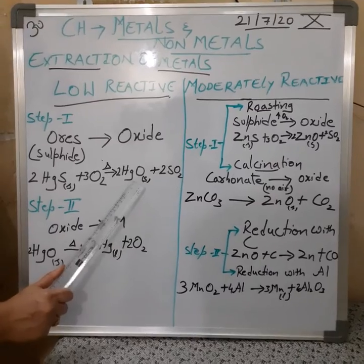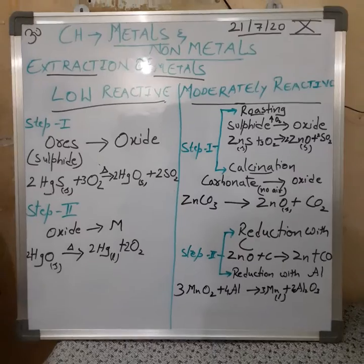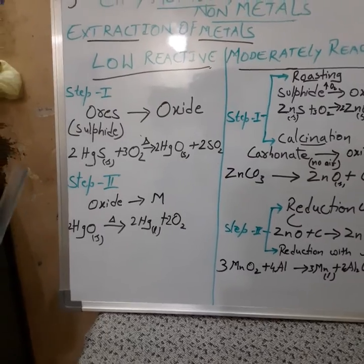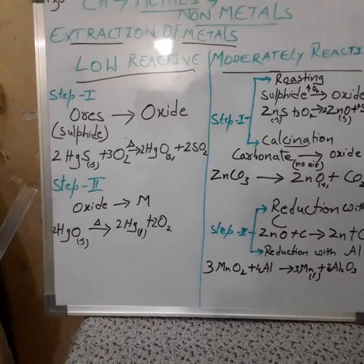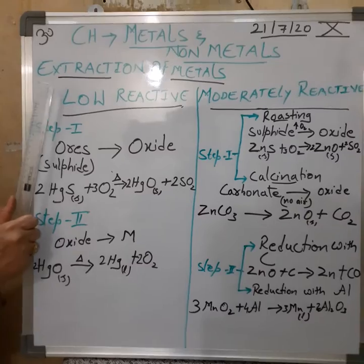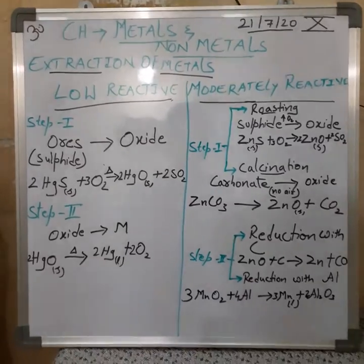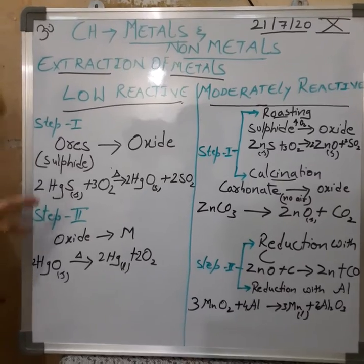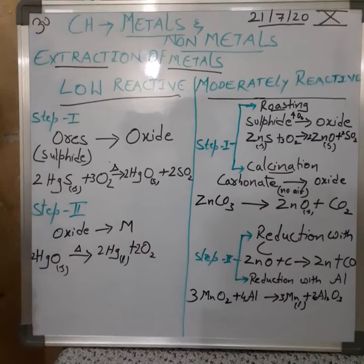By heating in excess air, we obtain the oxide, and sulphur dioxide is the by-product. Step two is converting this oxide to the metal, again by heating but with a limited supply of oxygen or air. This applies to the elements of the low reactivity series. Since they are least reactive, they can readily be obtained from their ores and oxides by a heating or decomposition process.